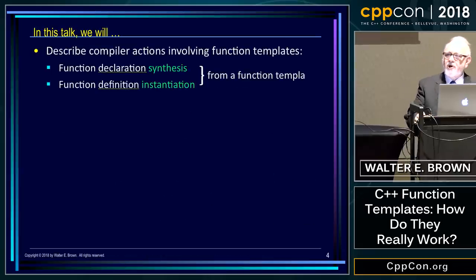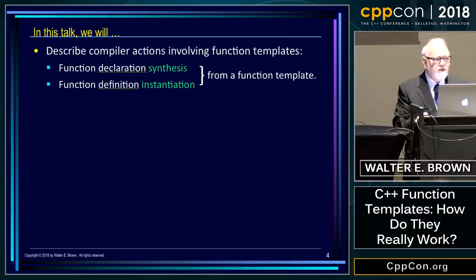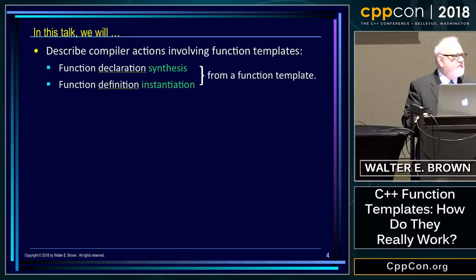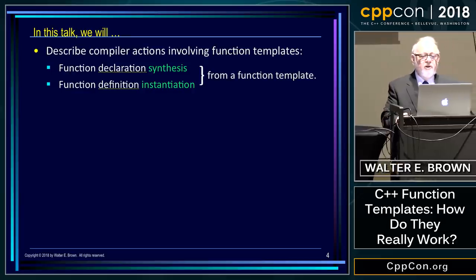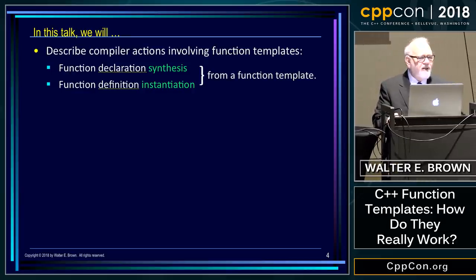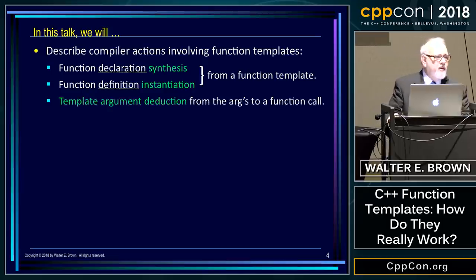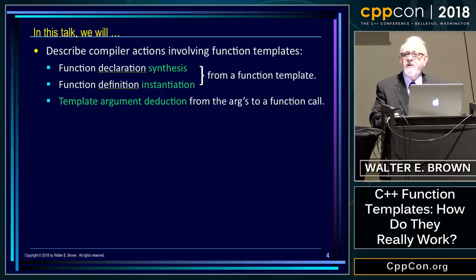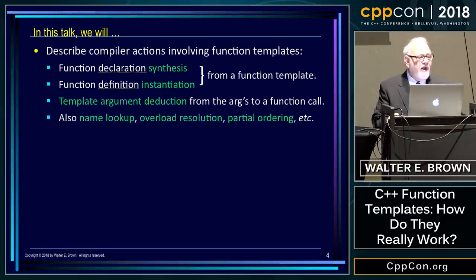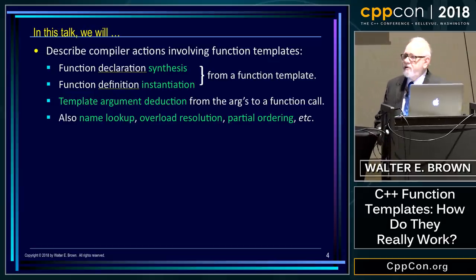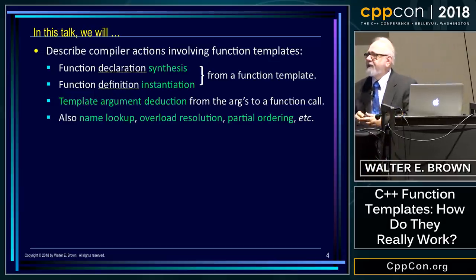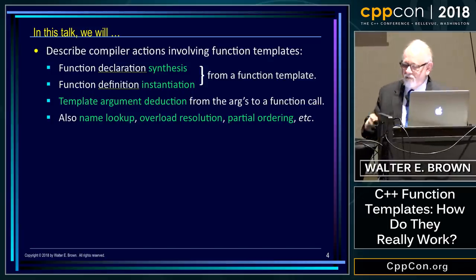In this talk we're going to discuss how compilers process function templates — in particular, the synthesis of function declarations and the instantiation of function definitions from a function template. We'll run across template argument deduction and a few other algorithms that compilers use, like name lookup, overload resolution, partial ordering, and so on.